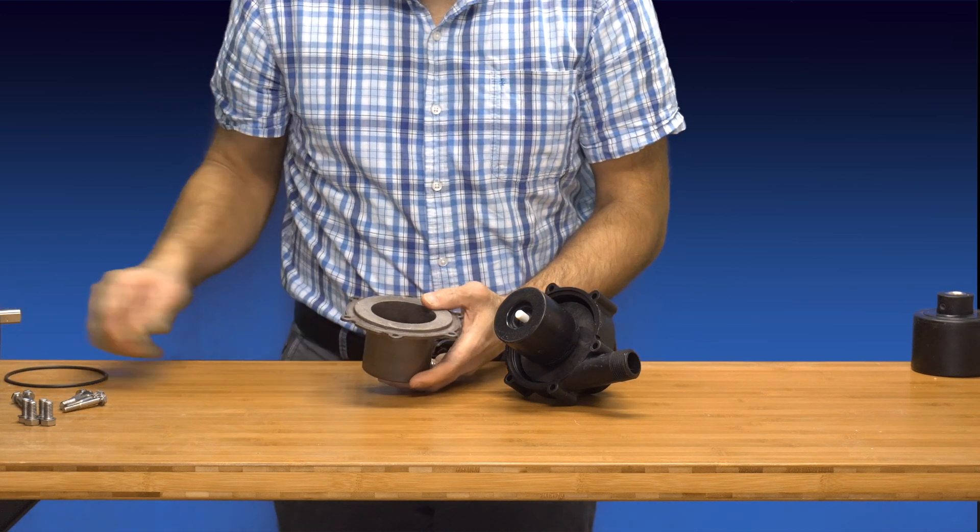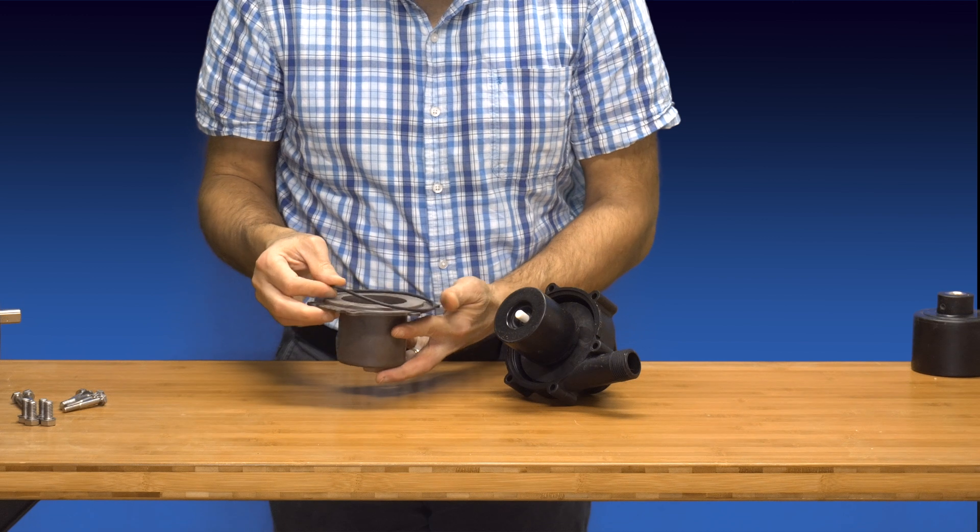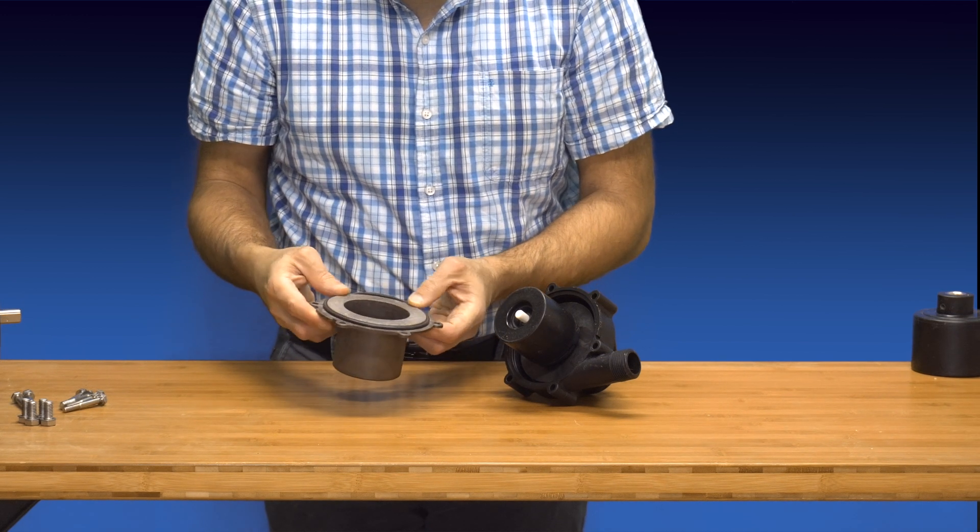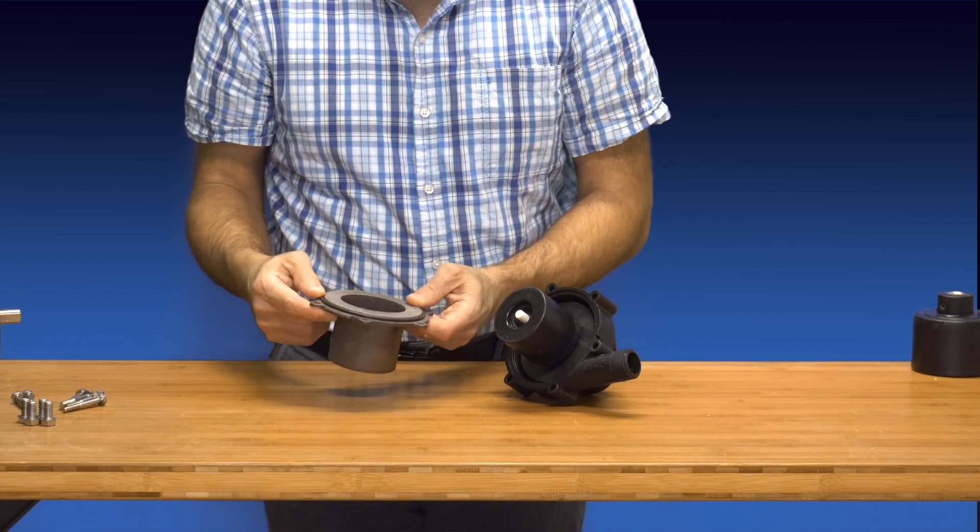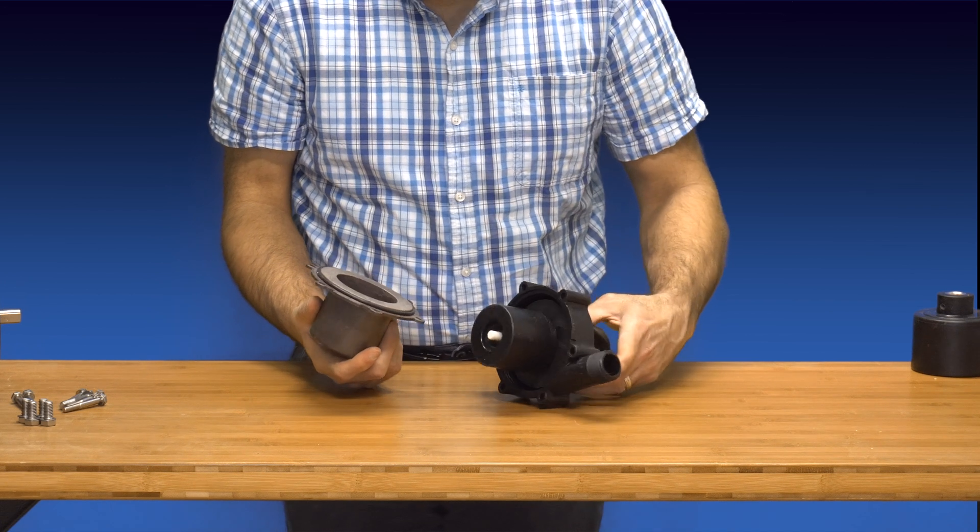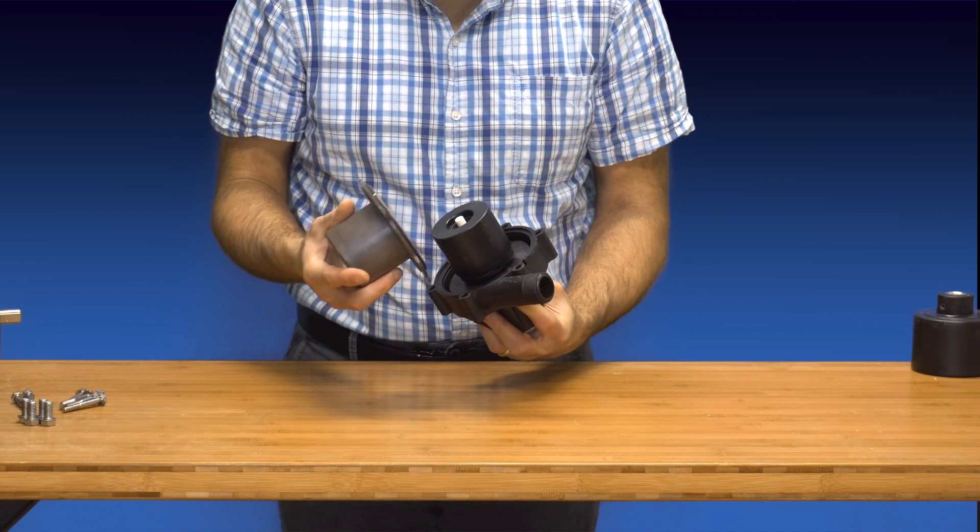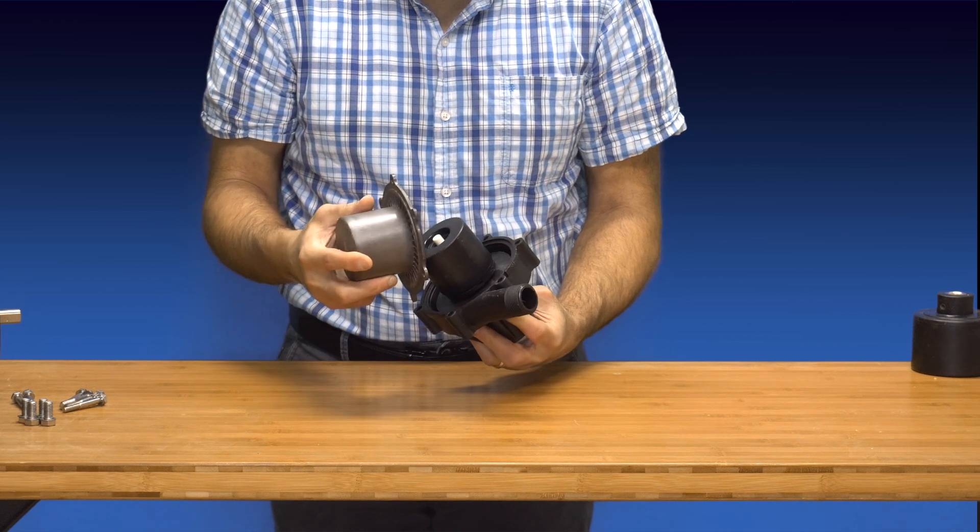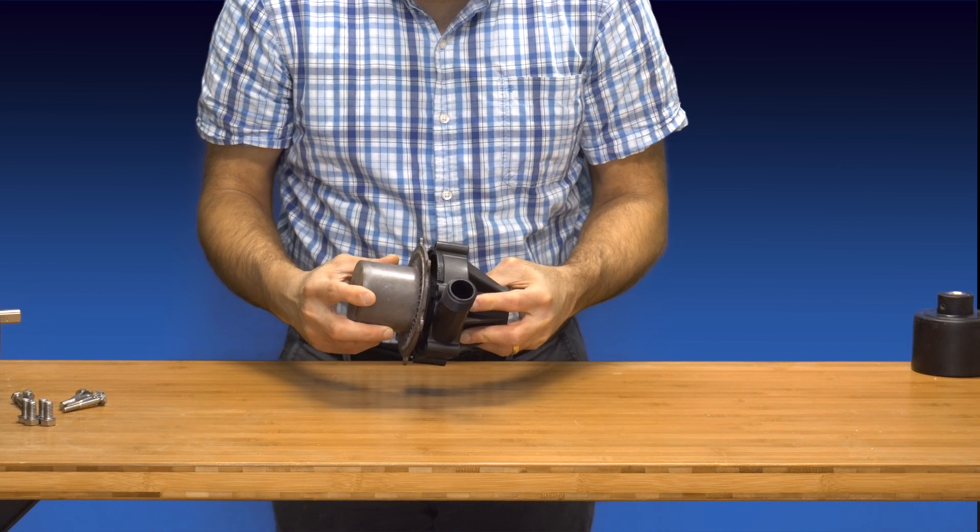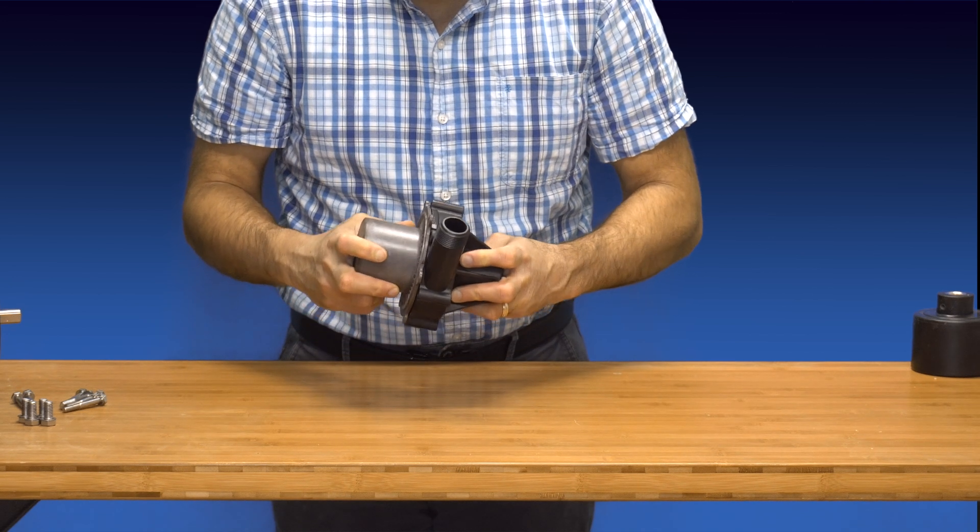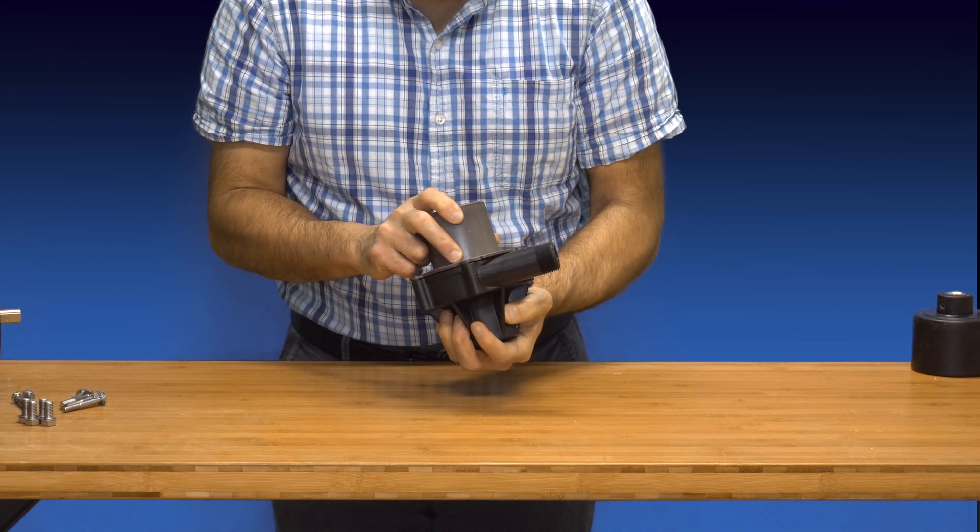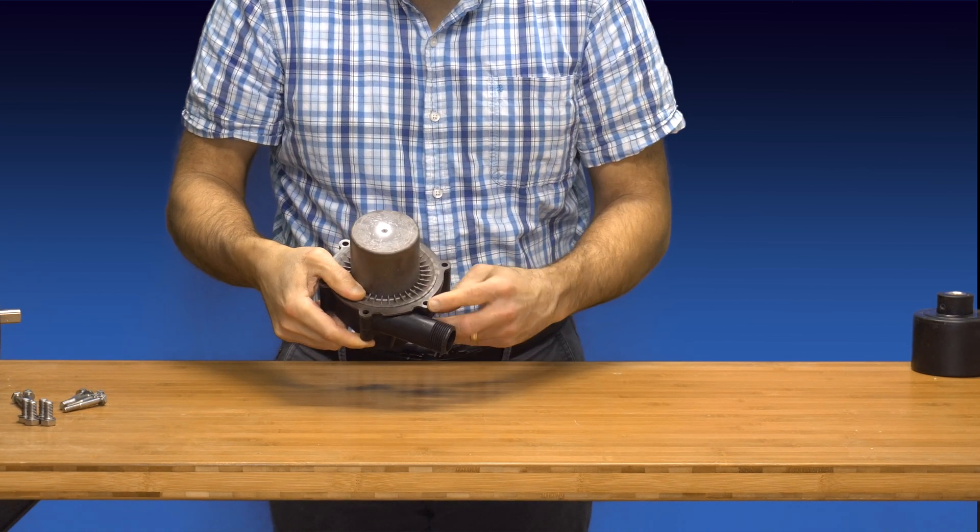Next, hold the rear housing in one hand and slip the O-ring over the front end of the rear housing. Now take the previously assembled front housing and impeller and combine it with the rear housing. Slip the rear housing over the back end of the impeller and engage the front end of the rear housing with the back end of the front housing. Also be sure to align the bolt holes on both parts. Seat the parts firmly together.